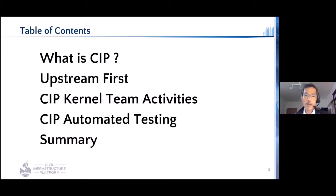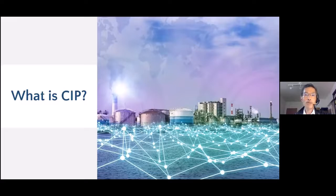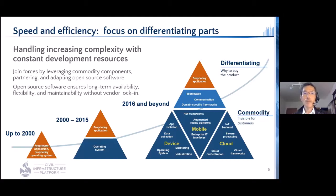Let's get started with what is CIP. CIP stands for Civil Infrastructure Platform. It was founded almost four years ago under the Linux Foundation. When you hear Civil Infrastructure, you may imagine heavyweight systems like power plants. That is true, but there are a lot more around us. Even industrial IoT devices can be categorized into Civil Infrastructure. The way to develop all those systems and devices has been changing.